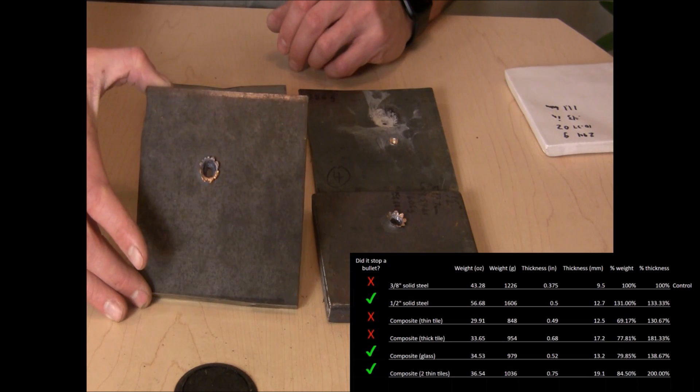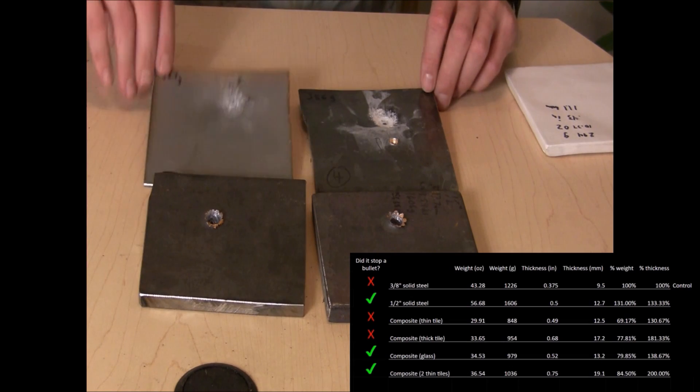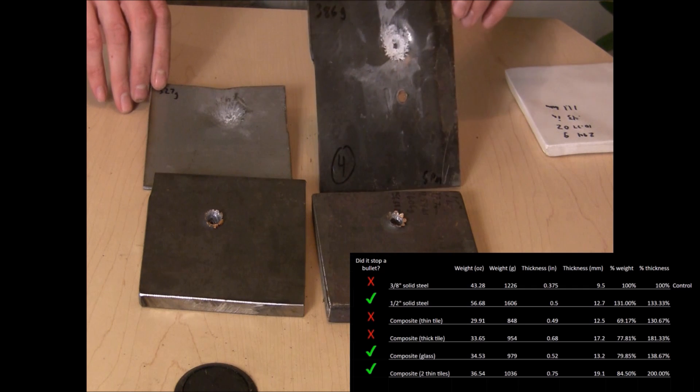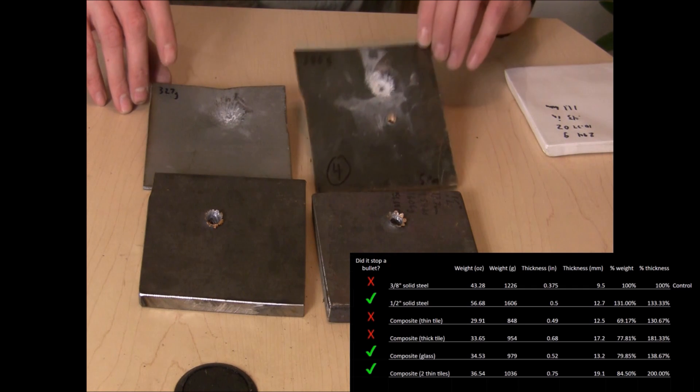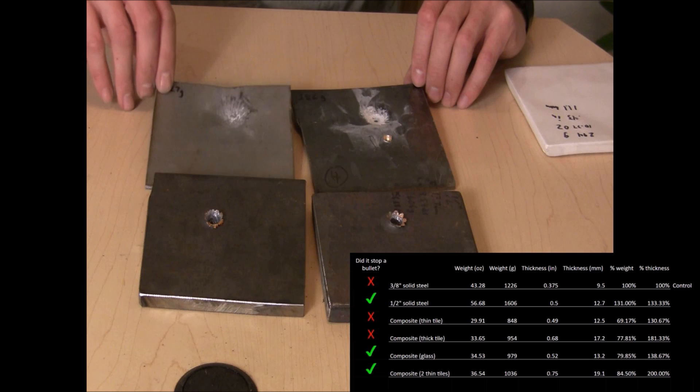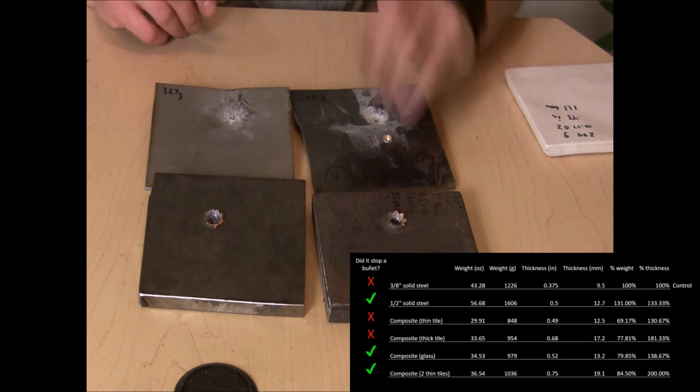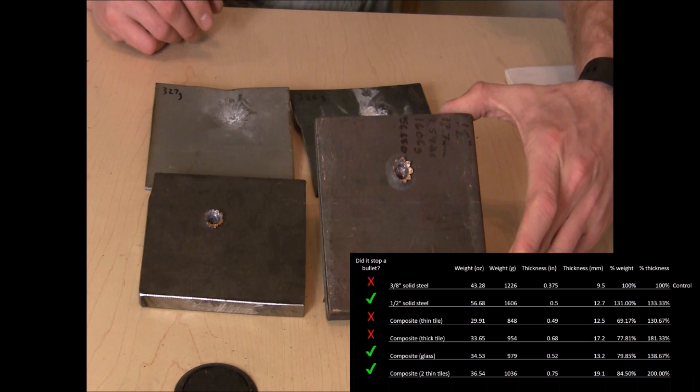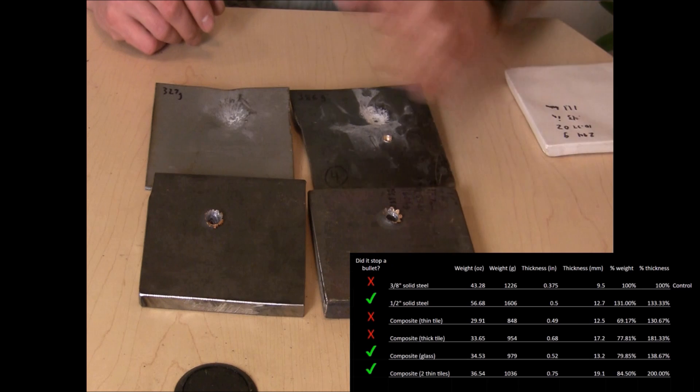Compared to the solid steel control plate, both the glass composite and double ceramic composite targets weighed 15 and 20% less, yet they still stopped a bullet like the 30% heavier 1/2 inch solid steel target.